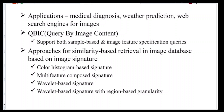QBIC — Query By Image Content — supports both sample-based and image feature specification queries. For similarity-based retrieval in image databases, based on image signatures, there are four types: color histogram based signature, multi-feature composed signature, wavelet based signature, and wavelet based signature with region-based granularity.